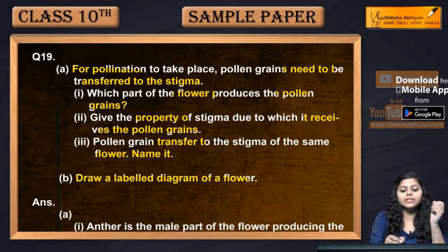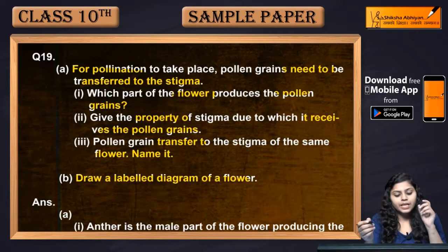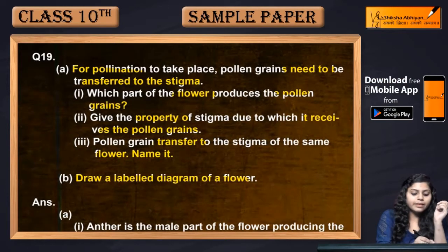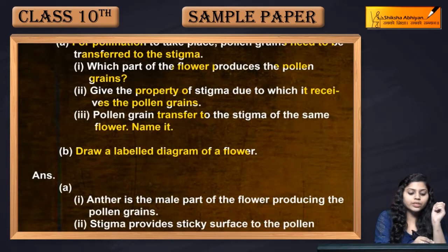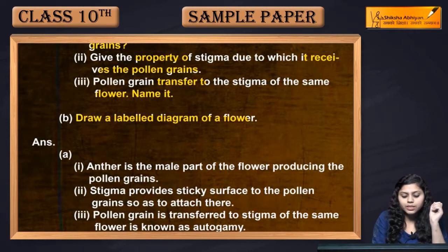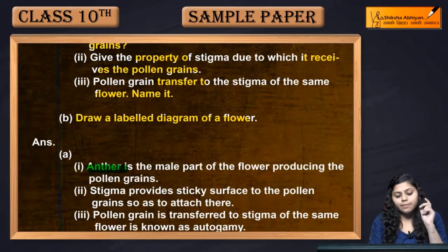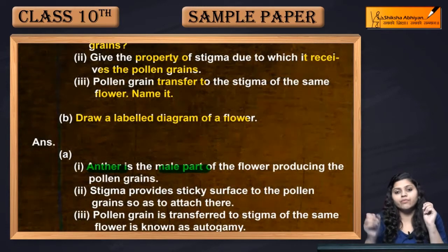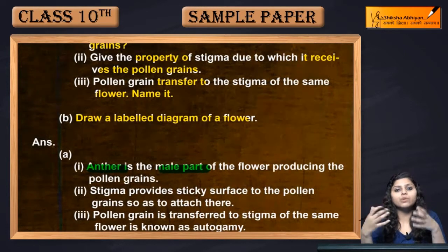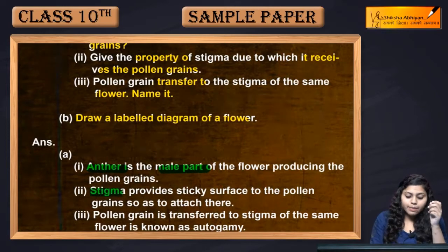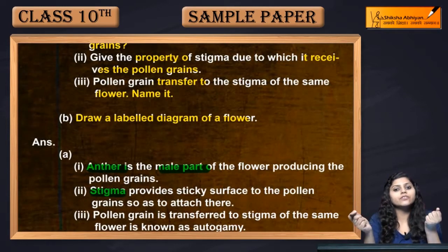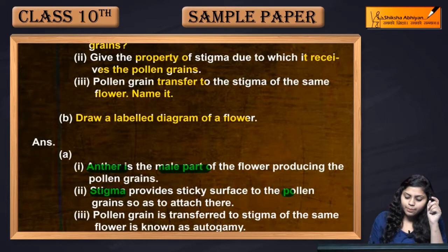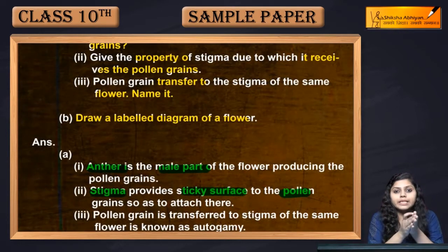Draw a labeled diagram of a flower. Sab se pehle — which part of the flower produces the pollen grains? The anther, which is the male part of the flower, produces pollen grains. Stigma kya provide karti hai? A sticky surface provide karti hai, taa ki pollen grain wahan aakar attach ho sake.